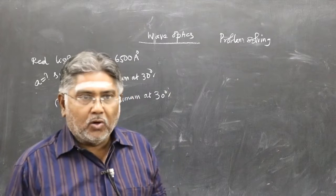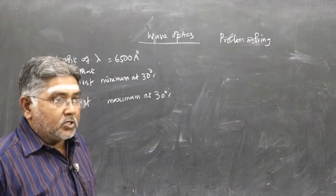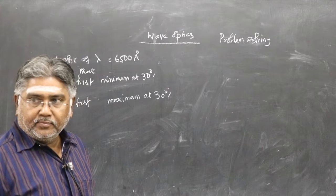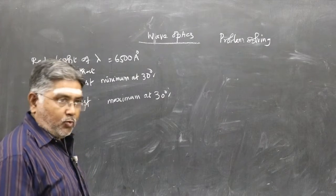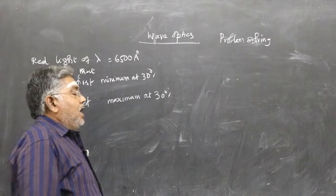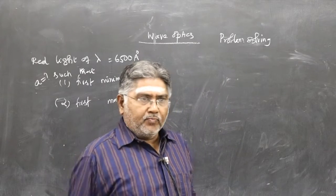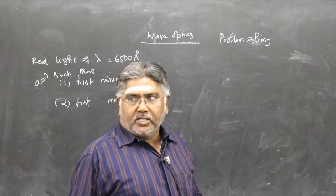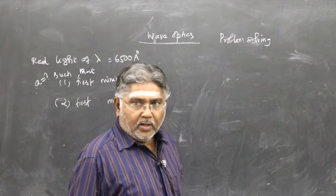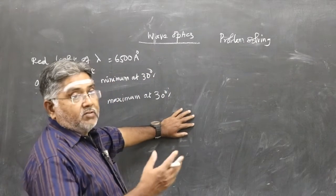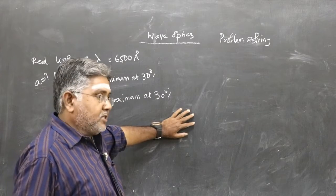The problem is about Fraunhofer diffraction. In single slit diffraction, you will have a central maximum, and on either side you will have minima and maxima. The maxima on either side of the central maximum are called secondary maxima.